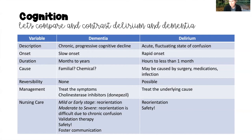The causes of dementia are still being researched; we're not 100% certain in every patient, but there may be familial or genetic tendencies, and there could also be some chemical exposures. Delirium, on the other hand — especially in older adults — is often caused by a surgical procedure, medications, or an infection. Dementia is not reversible; it is a chronic progressive cognitive decline, whereas delirium is usually reversible once we treat the underlying cause.